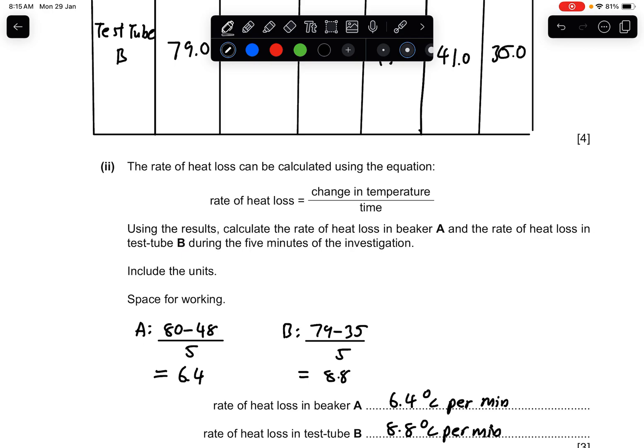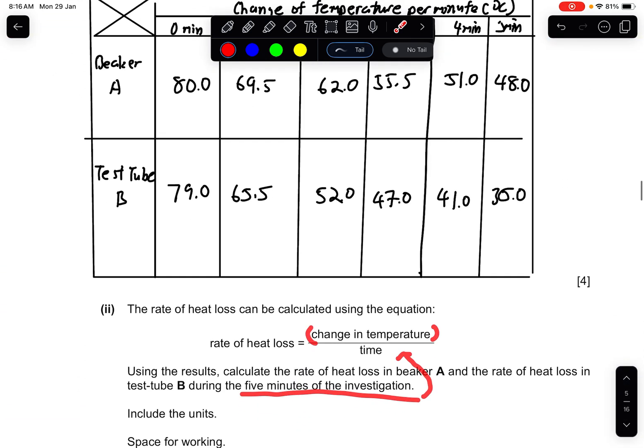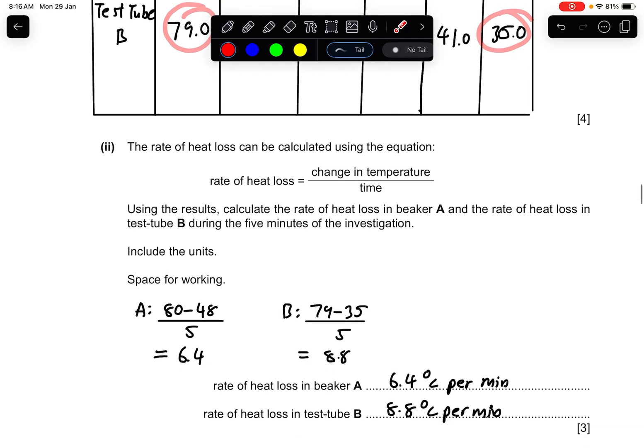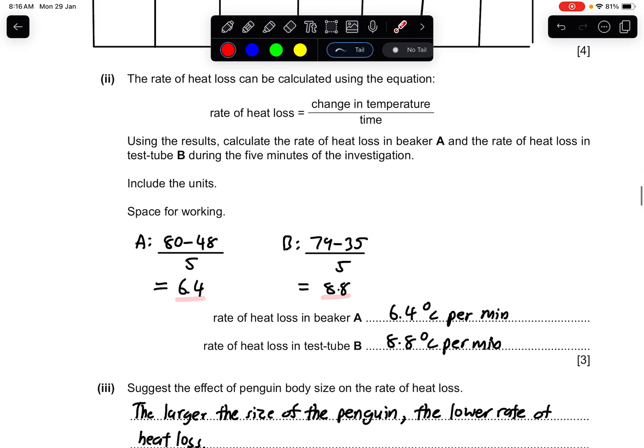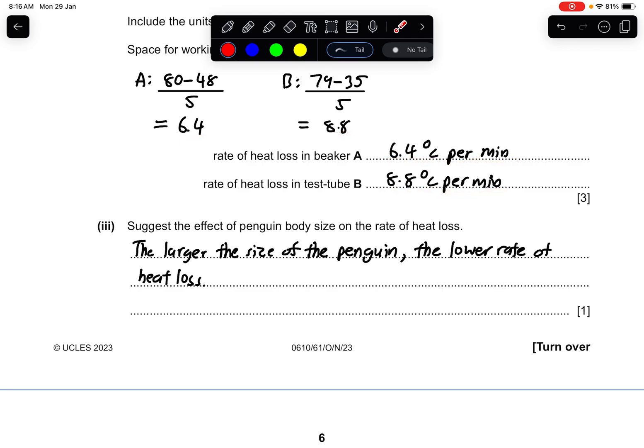They have given you the solution for this. For the change in temperature, you will get it from your results. Take from the highest to the lowest highest for test tube B to the lowest of test tube B, and then divide it. You get 6.8 and 8.8, and your unit must be 6.4 degrees per minute and 8.8 degrees per minute.